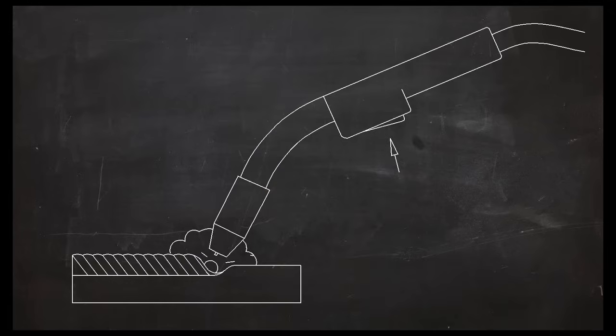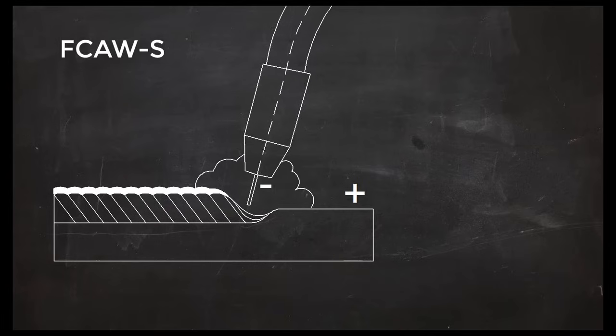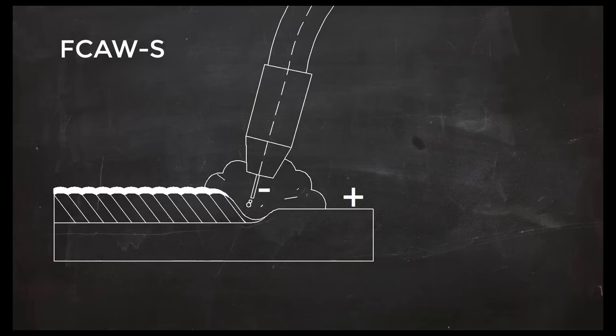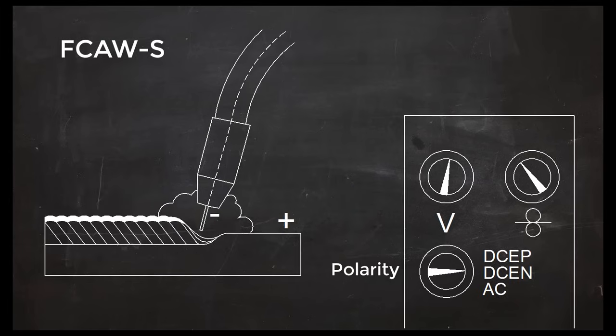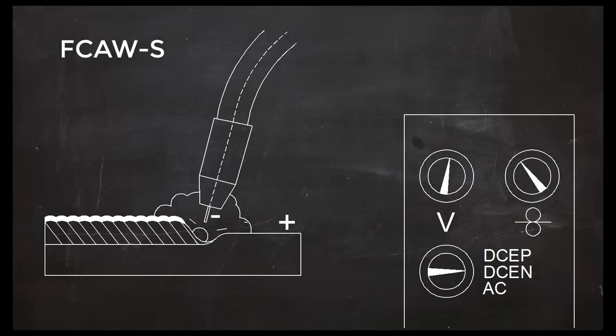For most flux core welding, the current is direct current or DC. DC is like the current flowing from a car battery. One wire is always negative and one is always positive. In self-shielded flux core welding, the electrode is usually negative and the workpiece is positive. The term DCEN is used for this, indicating that the current is DC and the electrode is negative. You might also hear this called straight polarity.